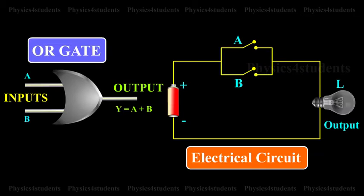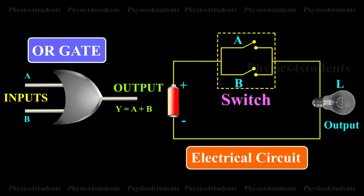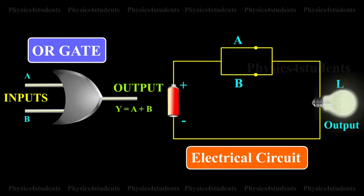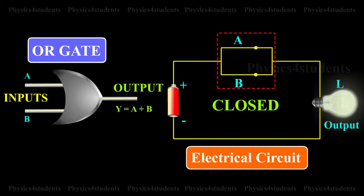The OR gate can be thought of like an electrical circuit shown in the animation in which switches are connected in parallel with each other. The lamp will glow if both the inputs are closed or any of them is closed.